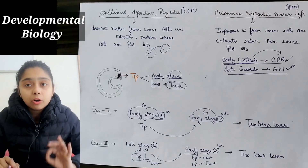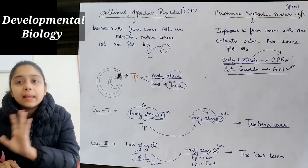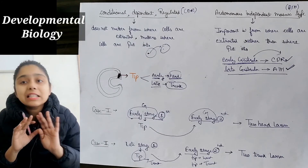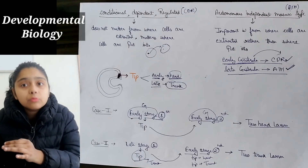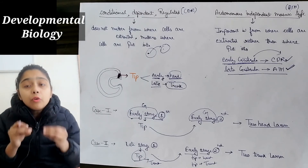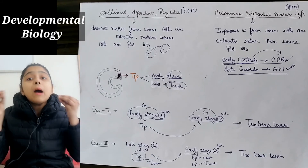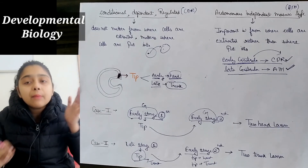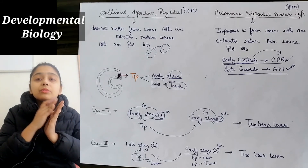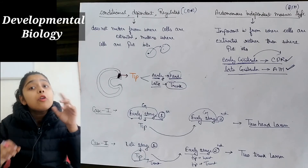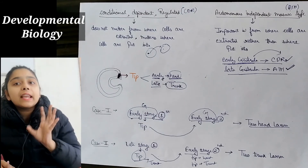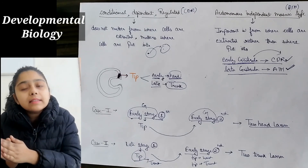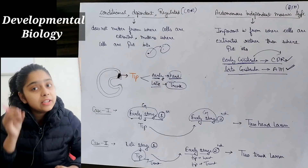The key points to remember are: CDR cells function according to their environment and do not specify their own function, while AIM cells function autonomously regardless of environment. In early gastrula, cells are CDR, but the tip cells are an exception — they are already specified. In late gastrula, tip cells are specified for trunk formation.